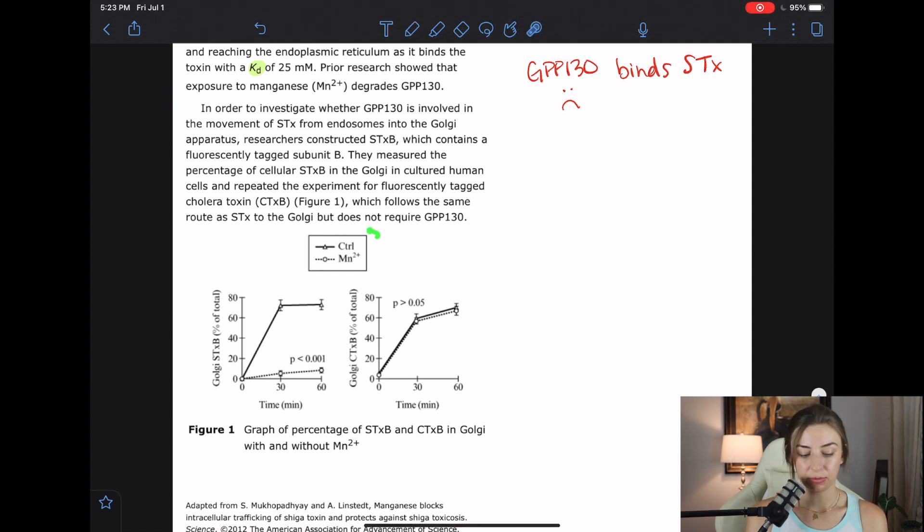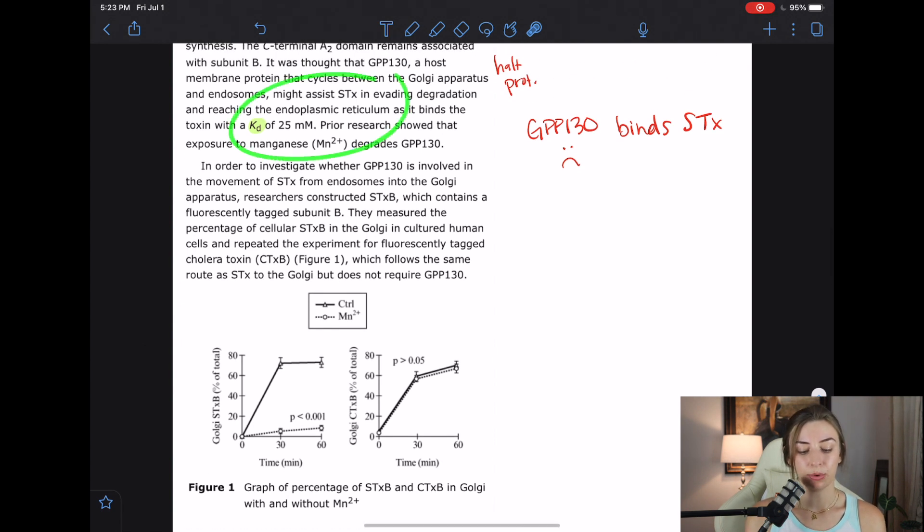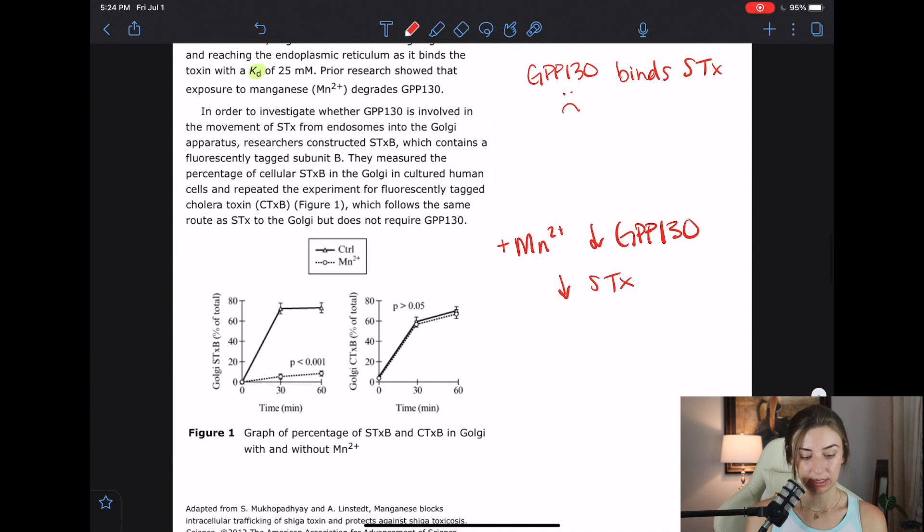So let's do a bit of figure interpretation. We see the key up here with the control and the manganese. So the dotted line is with the manganese. What would we expect? Ask yourself that before you really get into these figures, what do you expect? If the hypothesis is correct, when we add in manganese, we should see a decrease in the GPP-130 effect at least. And so we should see a decrease of the Shiga toxin being able to do anything. That's if the hypothesis is correct. Let's see if that's what we see.